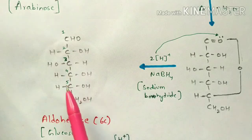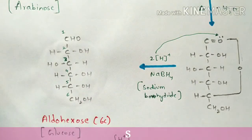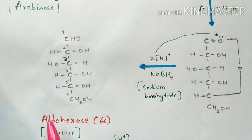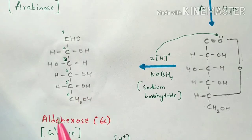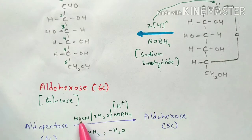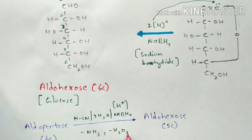This product is called aldo hexose — a six-carbon compound. Counting the carbons: 1, 2, 3, 4, 5, 6 — totally six carbons, which is glucose. The aldehyde group is present at the first carbon, so it is named aldo hexose. The main aim of Kiliani-Fischer synthesis is achieved: aldo pentose is converted to aldo hexose using these chemical agents, with ammonia and water removed as byproducts.